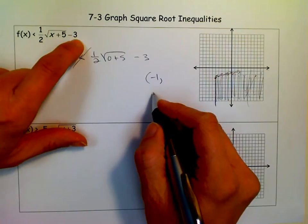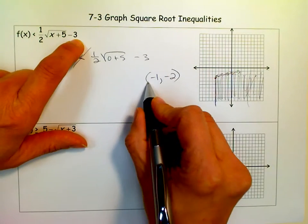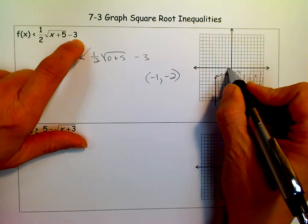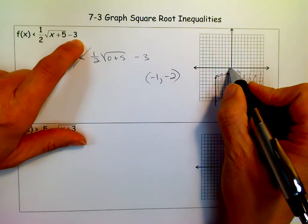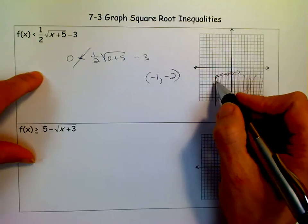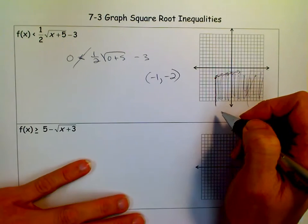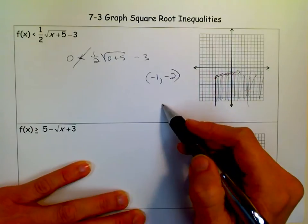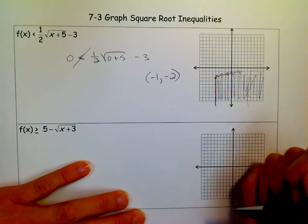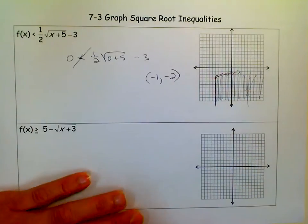And 1 minus 3 is negative 2. So when I put a negative 1 in, I get a negative 2. So negative 1, negative 2. You see it right there, which I had already guessed because of all the transformation knowledge I know. So it really is nice to know that stuff because then you don't have to pick points. But you can pick points or use a graphing calculator if it's allowed.